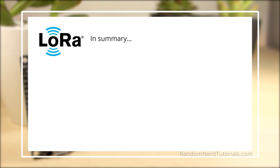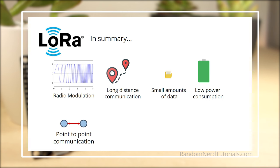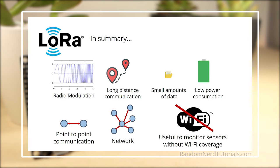In summary, LoRa is a radio modulation technique. LoRa allows long distance communication of small amounts of data and requires low power. You can use LoRa in point-to-point communication or in a network using LoRaWAN. LoRa can be especially useful if you want to monitor sensors that are not covered by your Wi-Fi network.